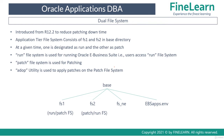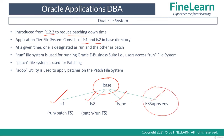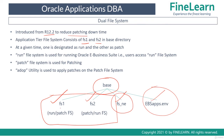Before going to the ADOP phases, we need to understand the dual file system in detail. The dual file system was introduced in release 12.2 to reduce downtime. The application file system contains two directories called FS1 and FS2 in the base directory. There is also FSNE (non-edition file system) and apps.env for the environment. At any given time, one of FS1 or FS2 is designated as the run file system and the other as the patch file system.